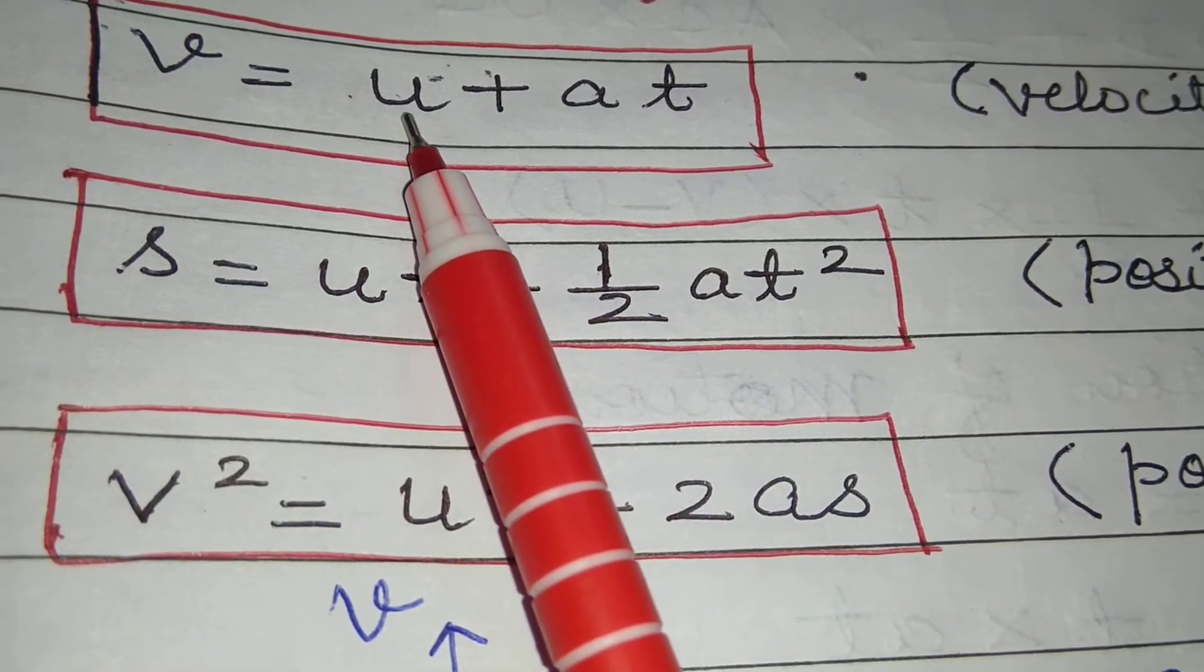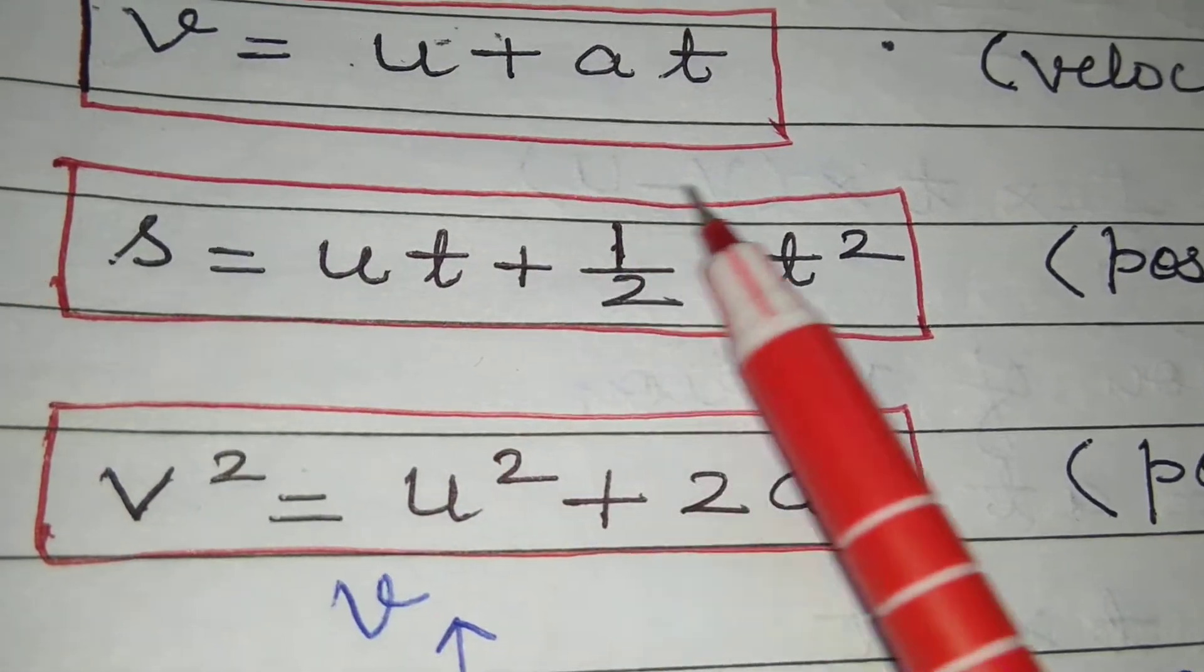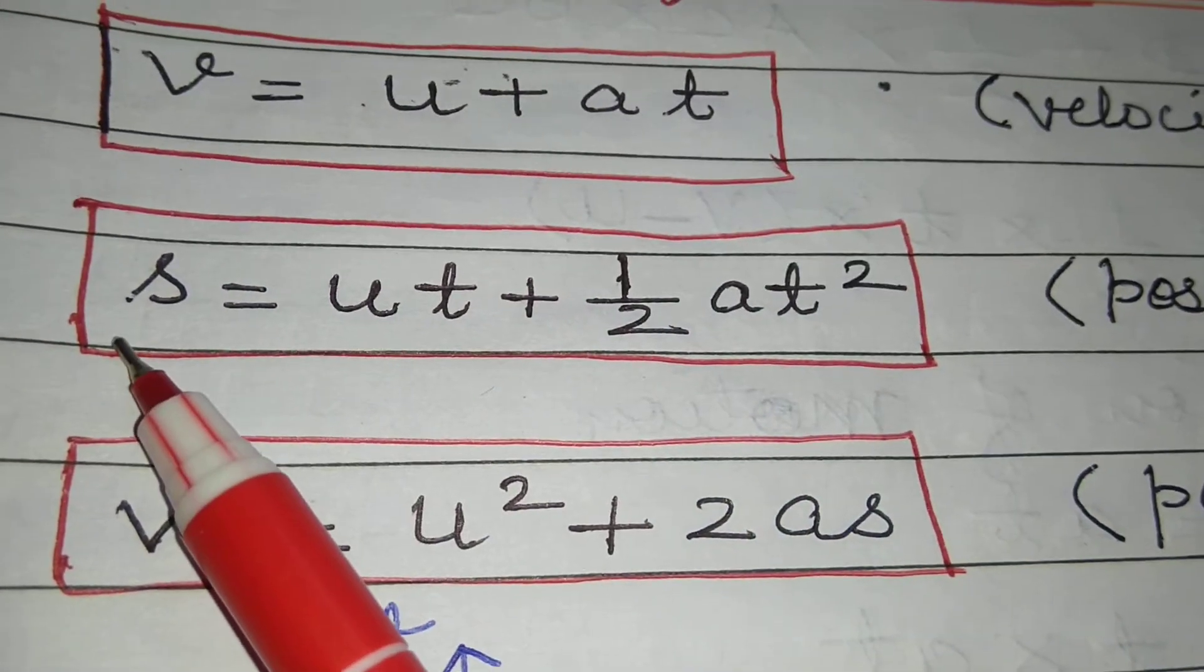Now you know these symbols. U is the symbol for initial velocity, v is for final velocity, a is acceleration, t is time, and s is the distance.